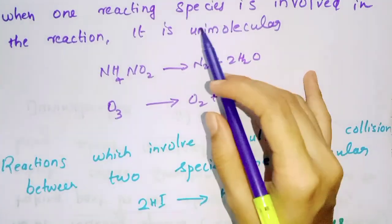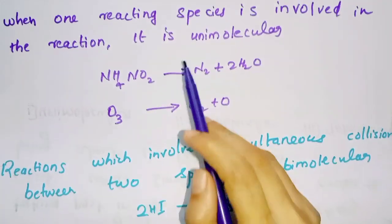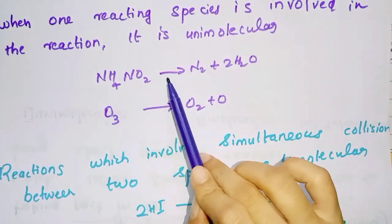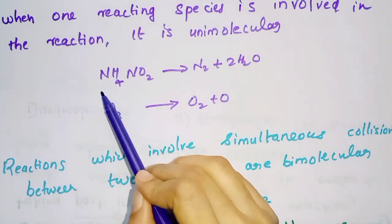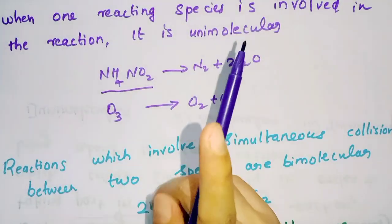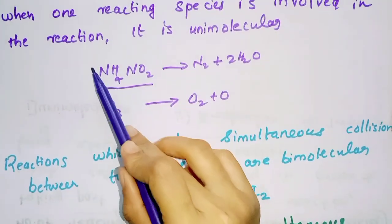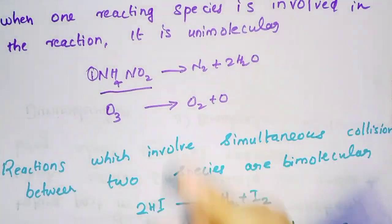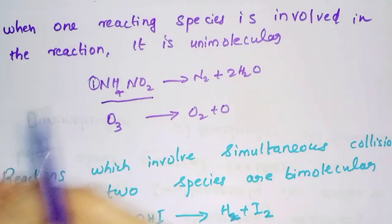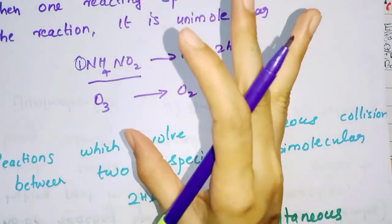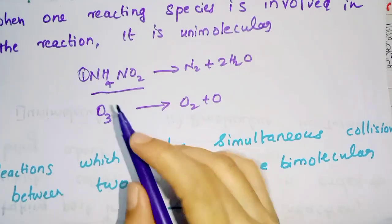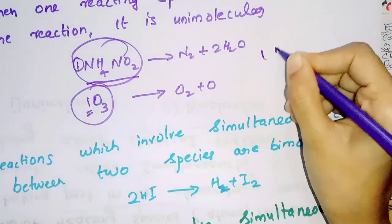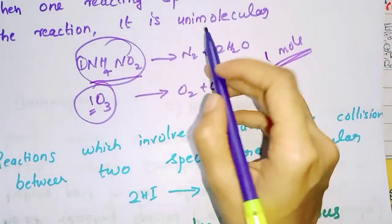When one reacting species is involved in the reaction, it is unimolecular. For example, NH4NO2 gives N2O plus 2H2O. The number of moles of reactant is one mole, so this reaction is unimolecular.